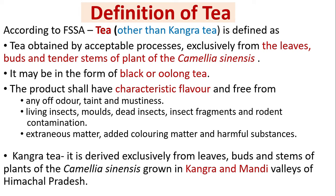According to FSSAI, tea other than Kangra tea is defined as tea obtained by acceptable processes exclusively from the leaves, buds, and tender stems of the plant Camellia sinensis. It may be in the form of black or oolong tea. The product shall have characteristic flavor and be free from any off odor, taint, mustiness, living or dead insects, insect fragments, rodent contamination, extraneous matter, added coloring matter, and harmful substances.